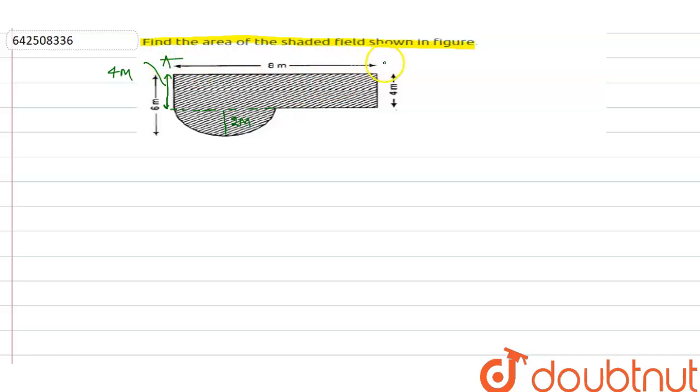this is point A, this is B, this is C, and this is D. And ABCD is a rectangle. Let's say this is E and this is O. Now ABCD is a rectangle and DOE is a semicircle. So area of shaded